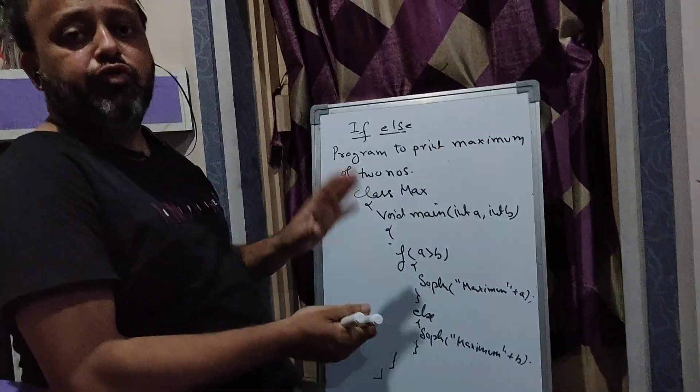Again, to recap: I have taken marks M — if M is less than 40, grade E. Greater than equal to 40 and less than 50, that is the range for grade D. Then greater than equal to 50 and less than 60, grade C — it continues like this.